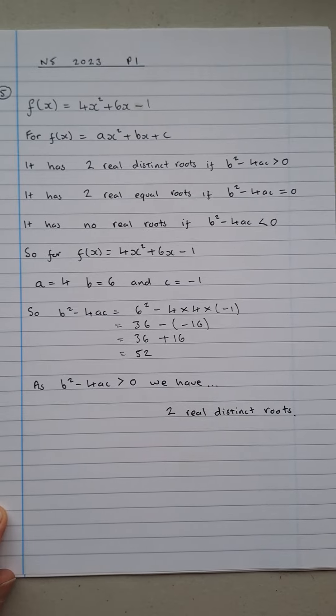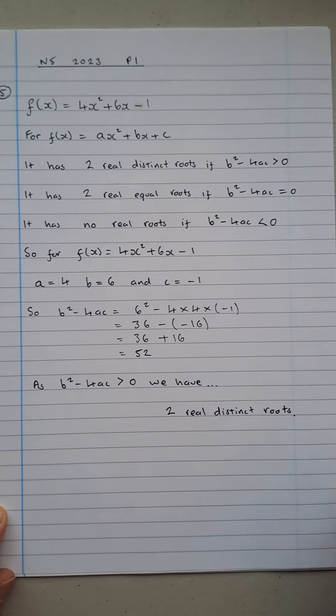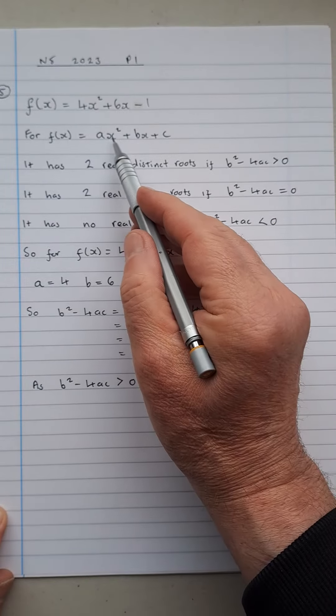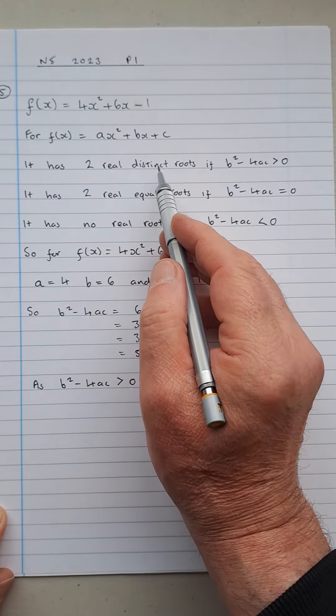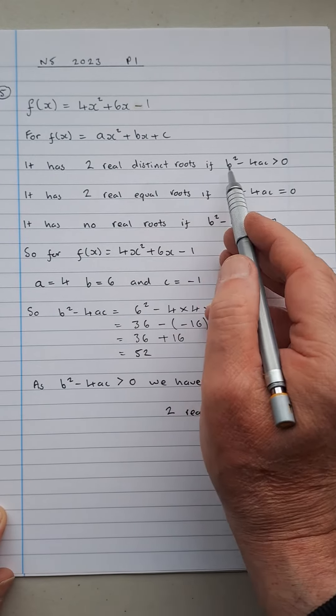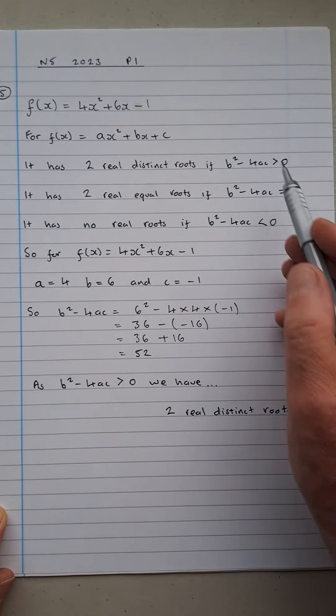That is basically asking you how many roots there are going to be. So generally for the function ax² + bx + c, it's got two real distinct roots if b² - 4ac is greater than zero.